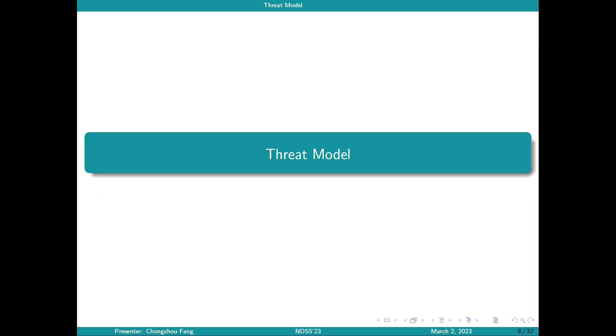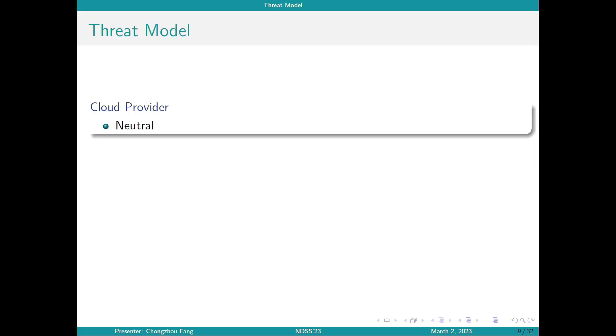The threat model of this work is presented as follows. First, regarding cloud providers, we assume they are neutral. That is to say, these cloud providers will not assist the attacker. But at the same time, the cloud providers are not aware of these attackers and will not deploy additional defense mechanisms. This is valid because this type of collocation attack is relatively new and related defense mechanisms have not been deployed yet. The cloud providers will consider both victims and attackers as normal users and will not differentiate between them.